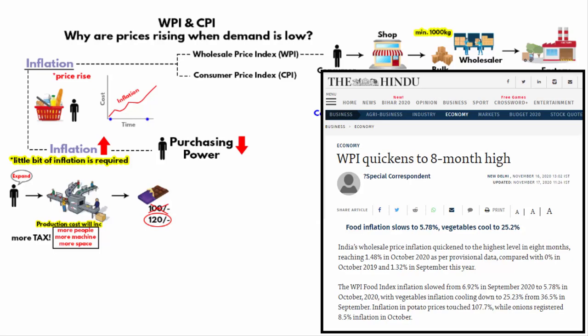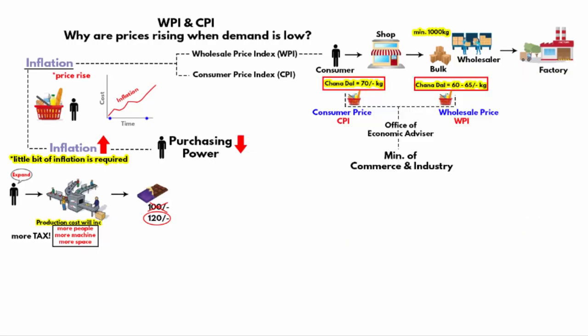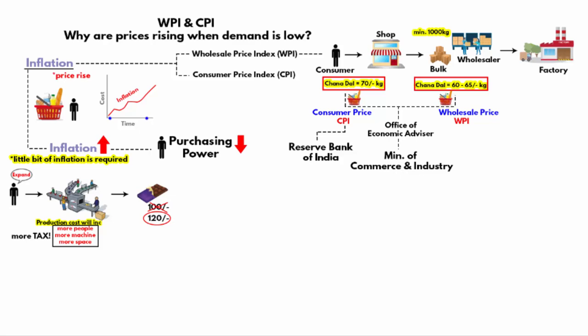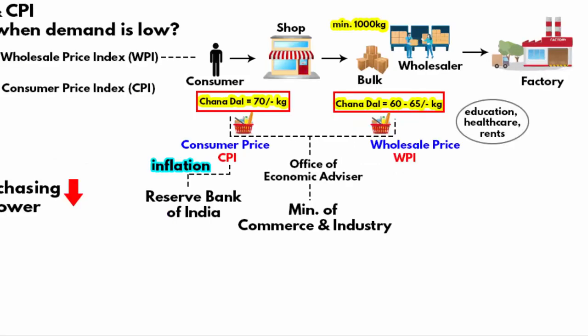The wholesale price inflation data for October 2020 was released. Wholesale price inflation increased to its highest level in 8 months, reaching 1.48% in October 2020, compared to 0% in October 2019 and 1.32% in September 2020. Since this is wholesale price inflation, the price rises are from the manufacturing side. However, the general public in India does not buy products at wholesale prices. That is why the Reserve Bank of India depends more on CPI than WPI. WPI excludes prices of services such as education, healthcare, and rents, which are part of the essential commodities basket.